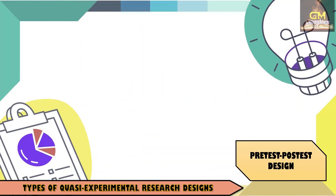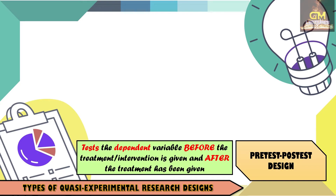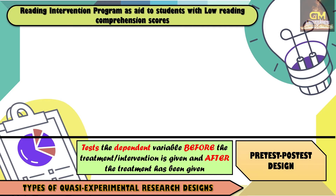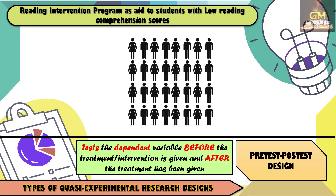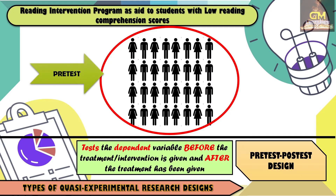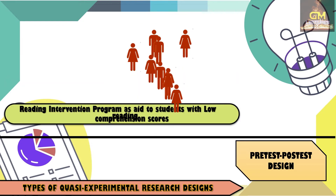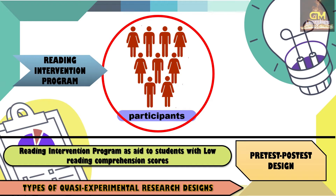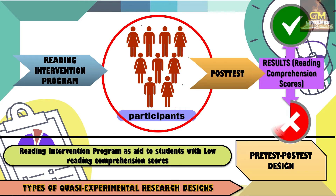The next design is the pre-test post-test design. This particular type of quasi-experimental research tests the dependent variable before the treatment or intervention is given and after the treatment has been given. Let's consider this example wherein we have a reading intervention program as aid to students with low reading comprehension scores. This particular group of participants will undergo a pre-test in order to identify who would be included in the actual reading intervention program. Once the participants have been identified, they will now undergo the treatment — the reading intervention program. After the reading intervention program has finished, they will undergo a post-test in order to identify the results, whether they pass or they failed. From these results, the researcher can now come up with conclusions and further recommendations.